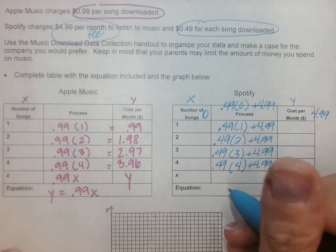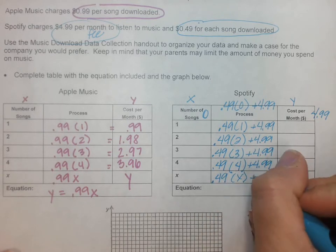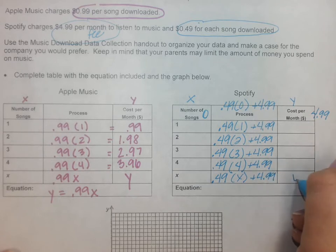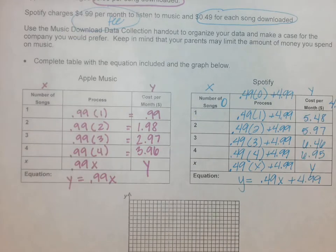Which leads me to my equation: 0.49 times x plus that $4.99. That will give you your amount. So I'm going to pause and you're going to get those values on the y side.